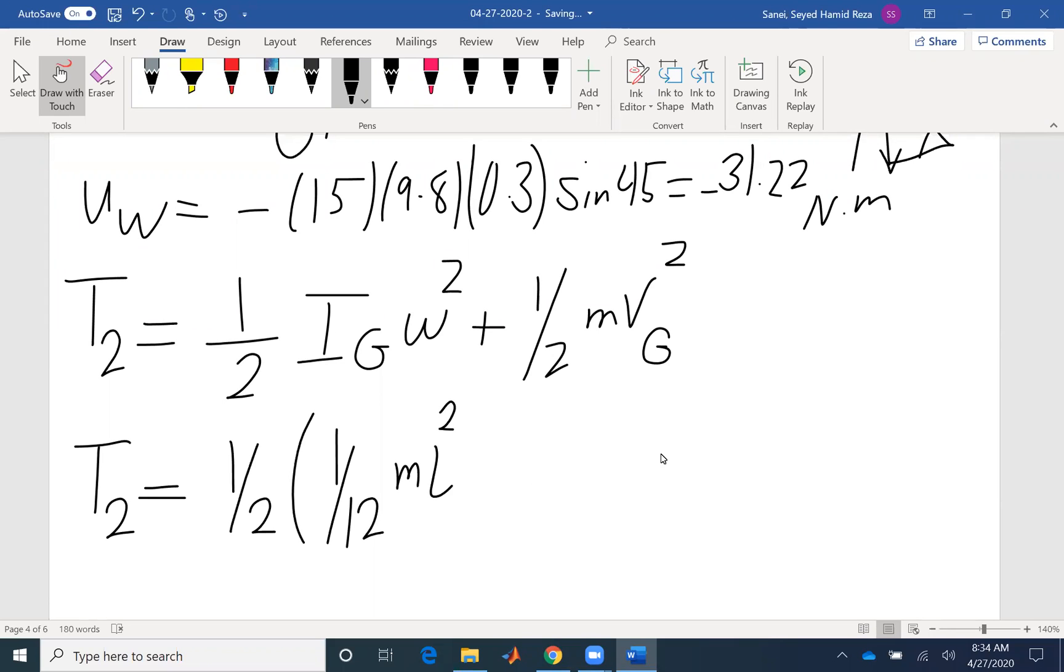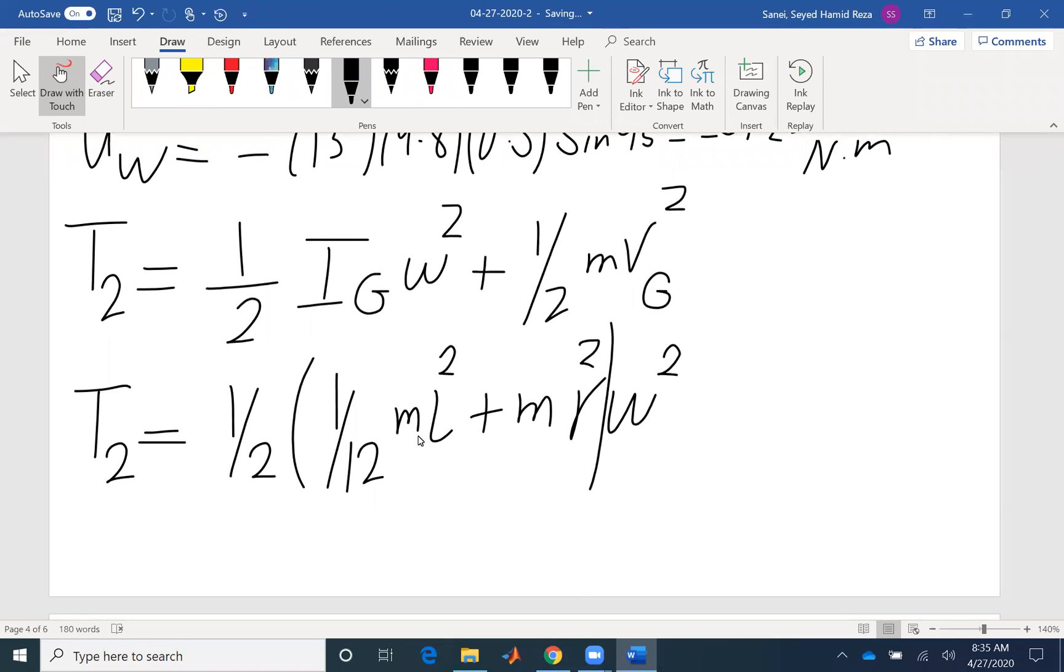So if I write here, I_G about center of gravity would be 1/12 m L squared. I'm going to factor half omega squared. Then I will have m, and V_G would be R omega. So R squared and the whole thing is omega squared. So I have the mass of the rod, I have the length. But what is this R?